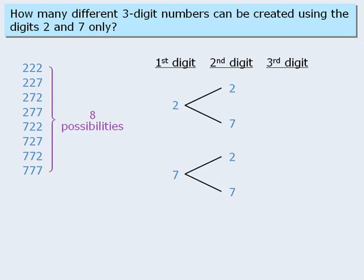Now, if the first digit is a 2 and the second digit is a 2, then the third digit can be either a 2 or a 7. And so it goes until we have the following tree.